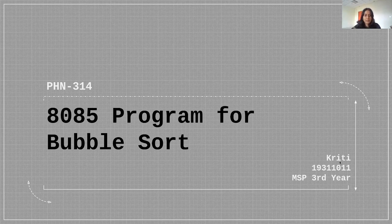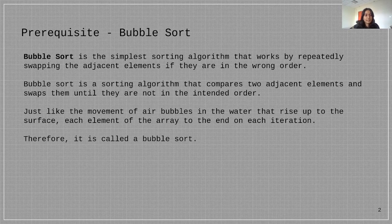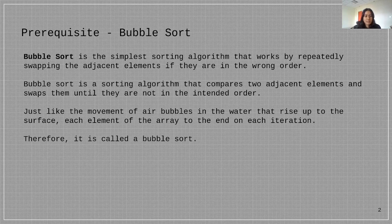In order to understand this video we need to understand what bubble sort algorithm is. It is a simple sorting algorithm that works by repeatedly swapping the adjacent elements if they are in the wrong order. It compares two adjacent elements and swaps them until they are in the intended order.